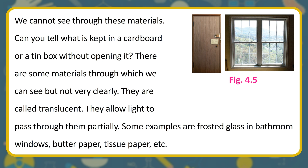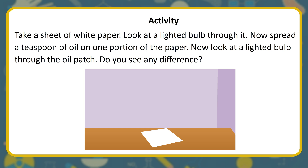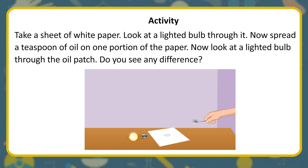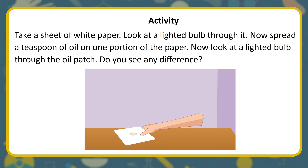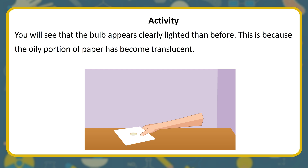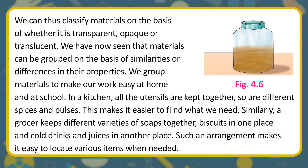There are some materials through which we can see but not very clearly. They are called translucent — they allow light to pass through them partially. Examples include frosted glass in bathroom windows, butter paper, and tissue paper. Activity: take a sheet of white paper and look at a lighted bulb through it. Now spread a teaspoon of oil on one portion and look through the oil patch. The bulb appears more clearly lit, because the oily portion has become translucent. Materials can thus be classified as transparent, opaque, or translucent.